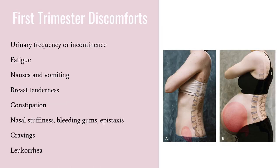During the first trimester, from conception to 12 weeks, the baby grows from the size of a poppy seed to as big as a roll of film by week 12. Emotionally, the focus of the mother is on herself, not the fetus. This is when the mother accepts the pregnancy and identifies what must be given up to assume this new role. This slide emphasizes the common discomforts during the first trimester, and it is important as a nurse to understand these and how to intervene.